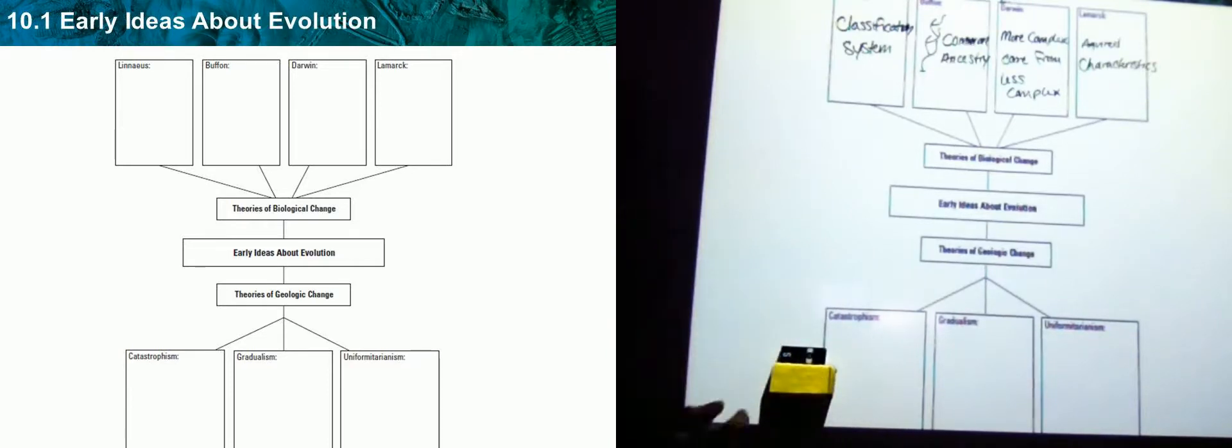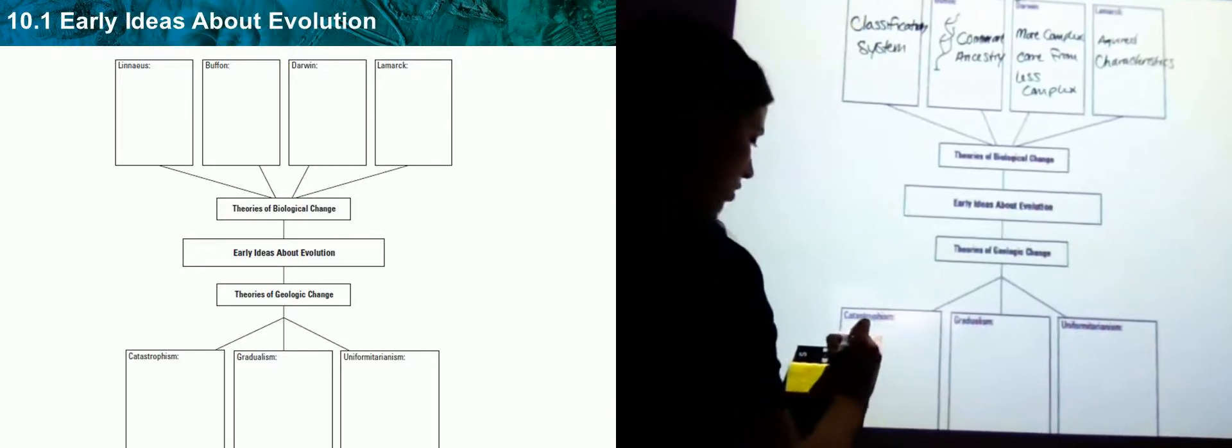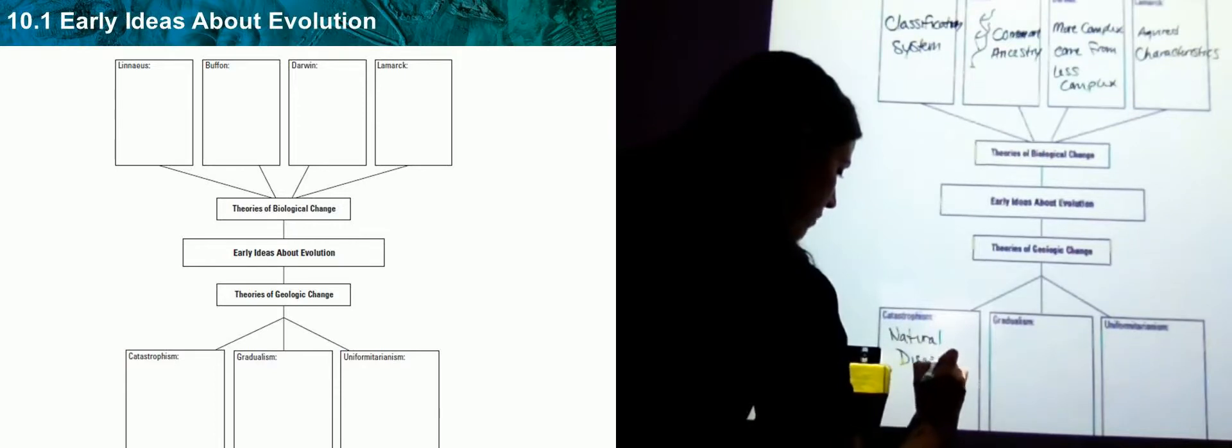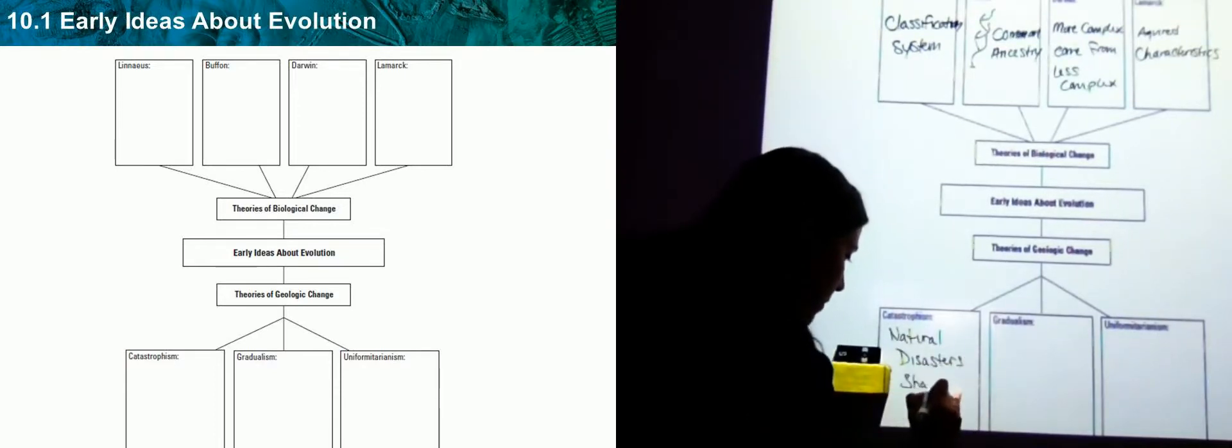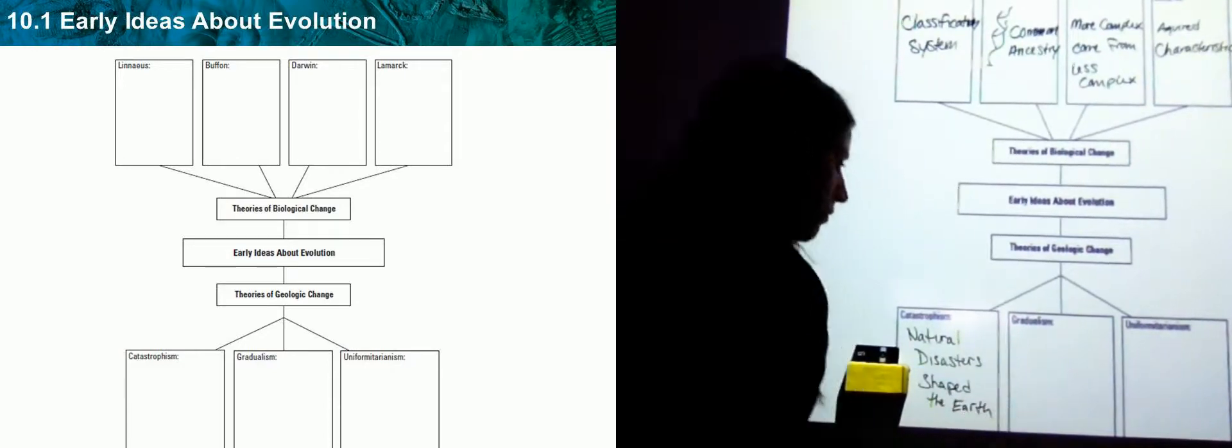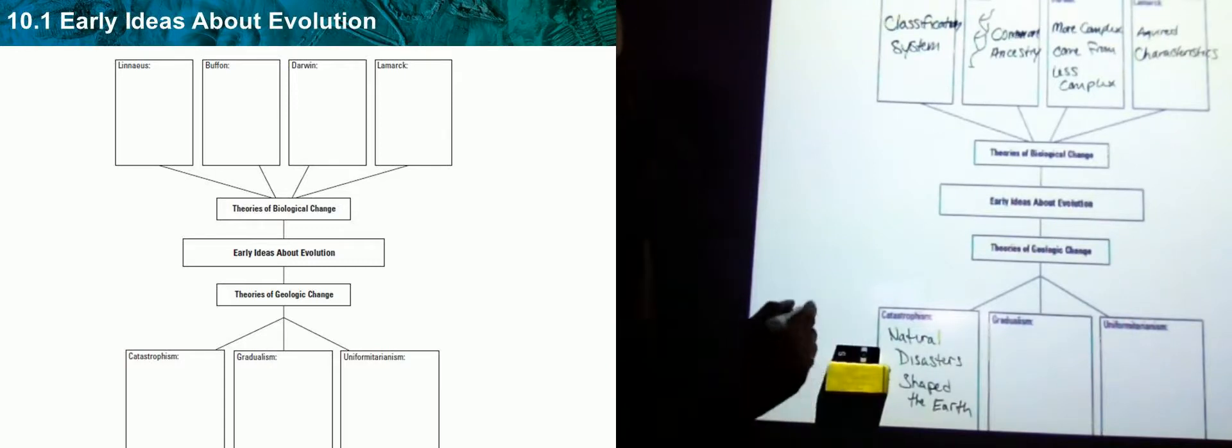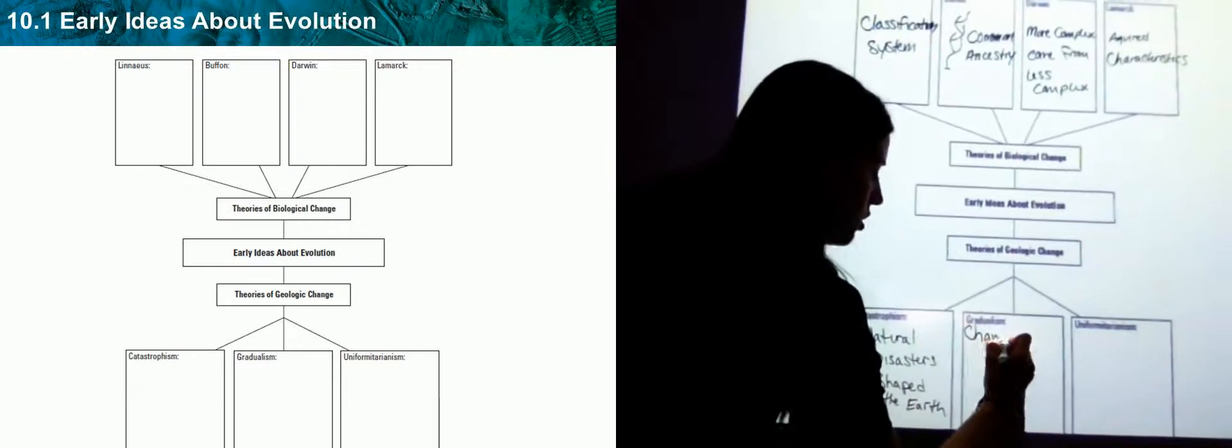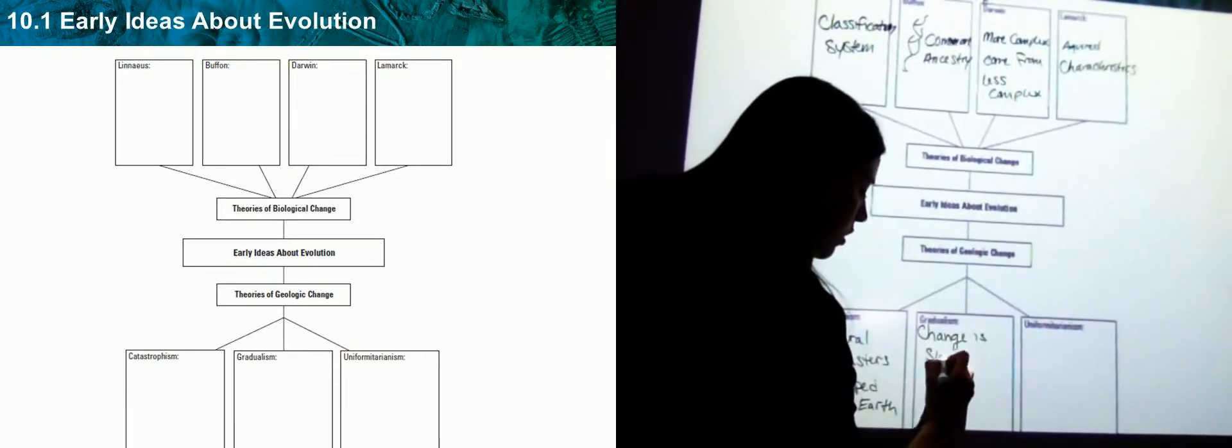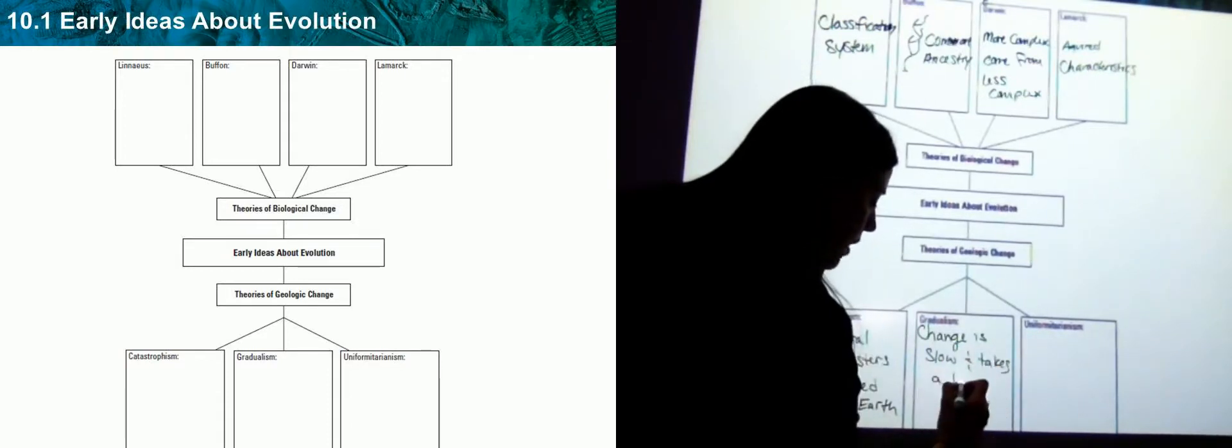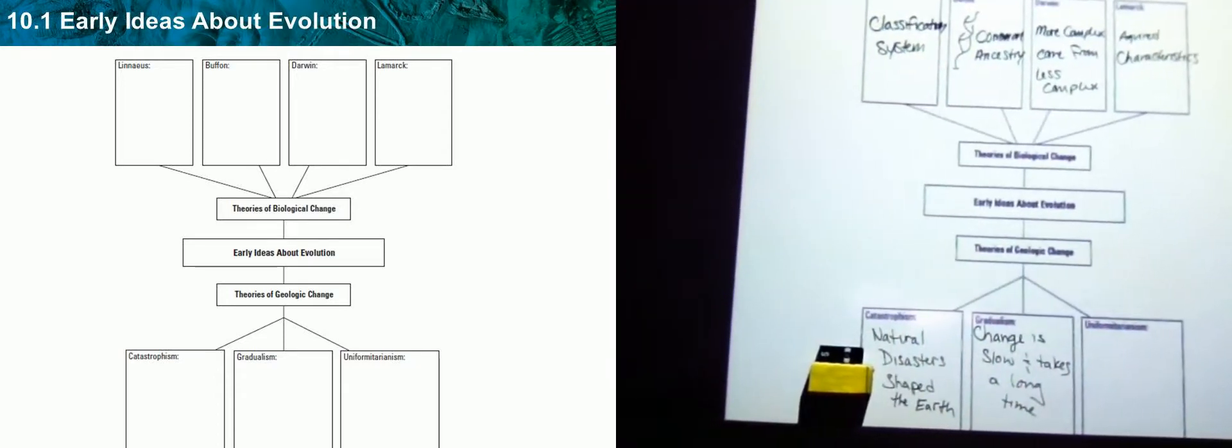The first one is catastrophism. And that's just natural disasters shaped the earth. Gradualism, look at the root word, it's gradual. Well, what does gradual mean? Change is slow and takes a long time.